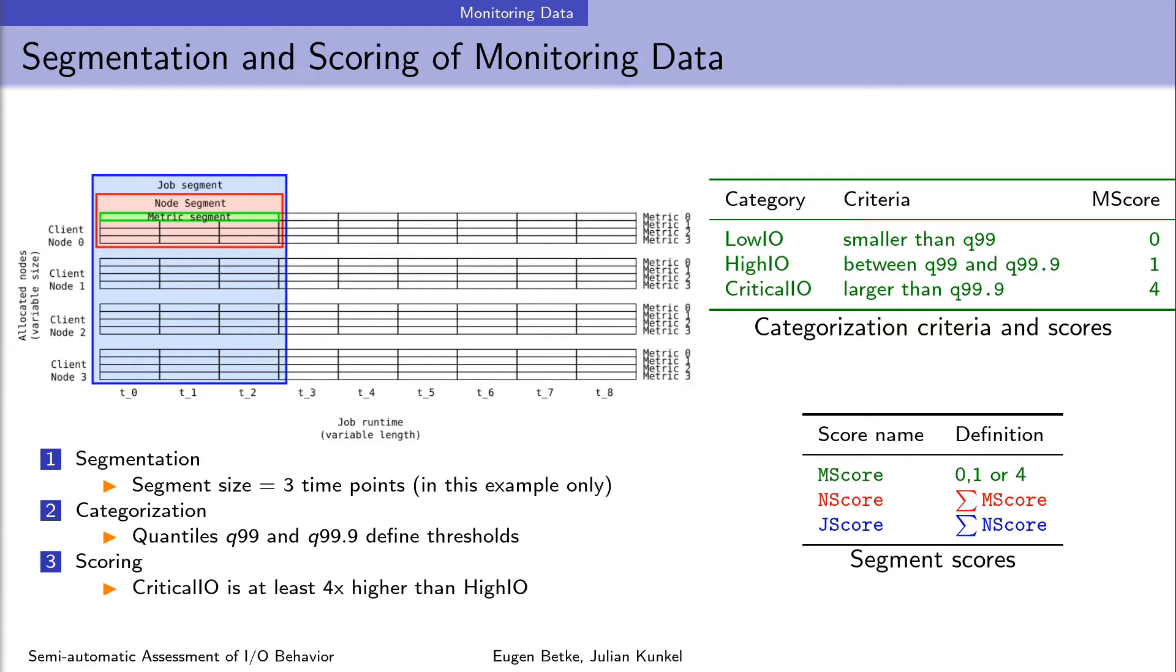This is what is happening during the second operation, the categorization. We apply two quantiles on a large set of segments to find two thresholds and to categorize performance into three categories. The performance below 99 quantile belongs to the low I/O category, between 99 and 99.9 quantiles to the critical category. You can see the summary of the criteria in the table on the right. You may wonder why have we chosen such high values for quantiles. The answer is because our goal is to find outlier jobs with exceptional I/O behavior. This can be easily done by higher quantiles.